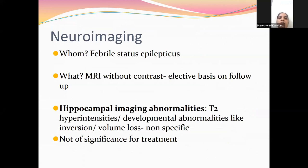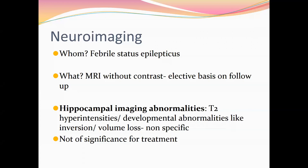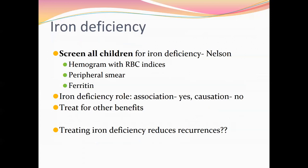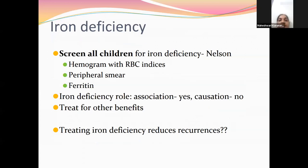The most common neuroimaging done for febrile seizures is MRI. Indications include febrile status epilepticus, which can be done without contrast. If neurodevelopmental abnormality is suspected — particularly hippocampal maldevelopment — MRI will show T2 hyperintensities, volume loss, and developmental abnormalities, though these are nonspecific. Hippocampal maldevelopment is particularly seen in mesial temporal sclerosis associated with febrile status epilepticus.